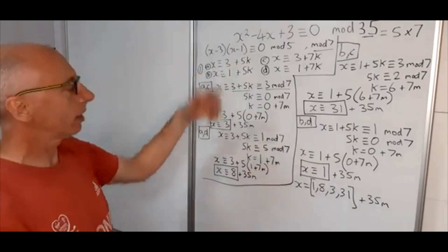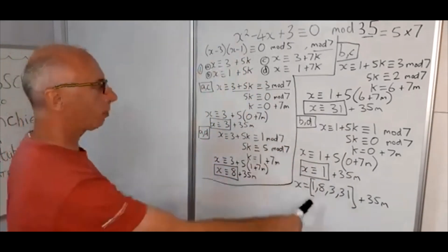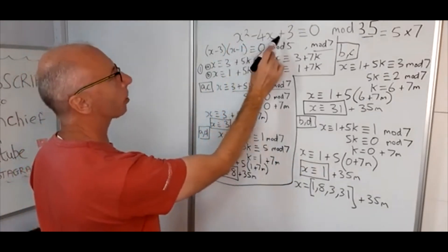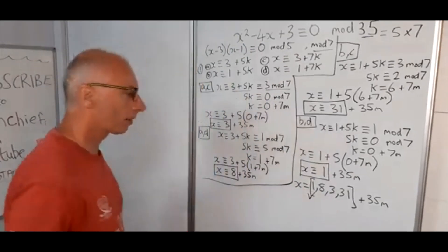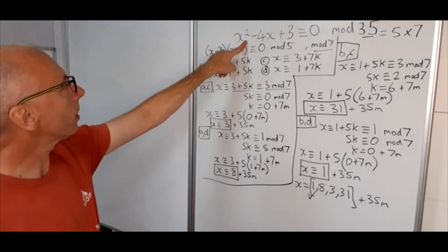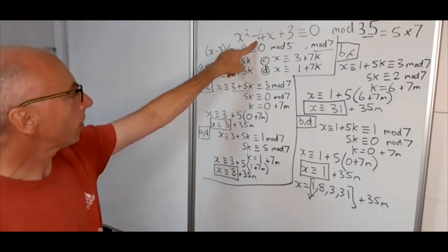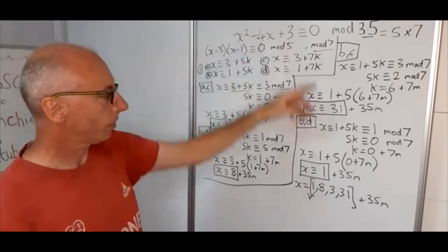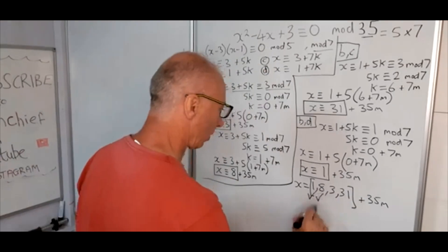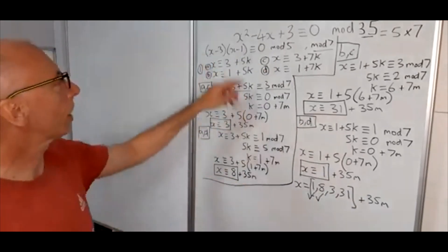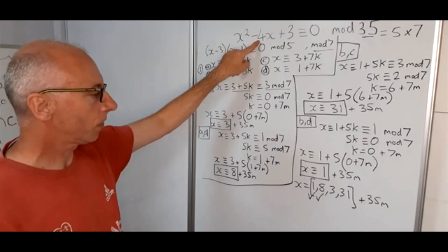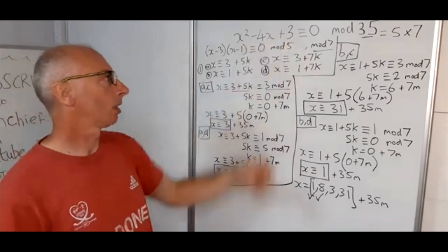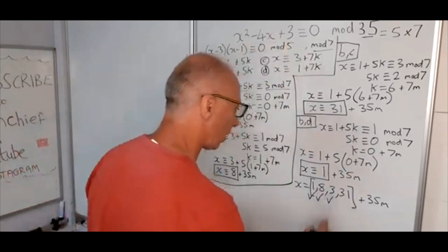Okay, now if you plug those back in to here, we can check the answers. So let's plug 1 in, 1 squared is 1, minus 4 is minus 3, plus 3 is 0, that's the 1 checked. 8 squared is 64, minus 4 times 8 is 32, so that's 32 left, plus 3 is 35, 35 congruent with 0 mod 35, certainly is. Now we try 3. 3 squared is 9, minus 4 times 3 is 12, so 9 minus 12 is minus 3, minus 3 plus 3 is 0, congruent with 0 mod 35.